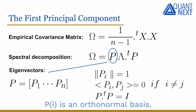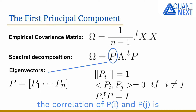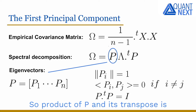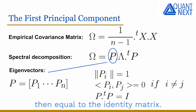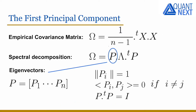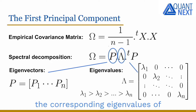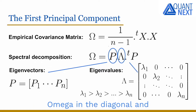The P_i form an orthonormal basis — they are unit vectors, and the correlation of P_i and P_j is equal to zero when i is different from j. The product of P and its transpose is then equal to the identity matrix. The matrix lambda is composed of the corresponding eigenvalues of omega on the diagonal and zero elsewhere.